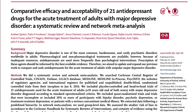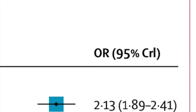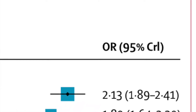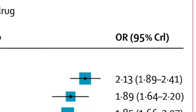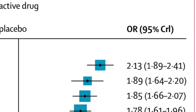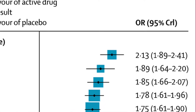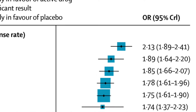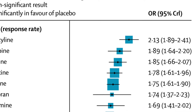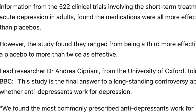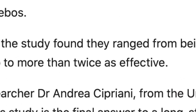For example, in psychopharmacology there was a recent meta-analysis looking at how effective antidepressant medications are compared to placebos. The results were expressed as odds ratios, but the media, and to an extent the practitioner community as well, didn't understand how to interpret these odds ratios and made completely wrong inferences about what the data said.